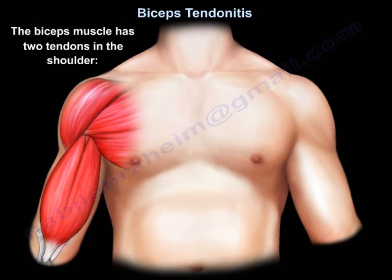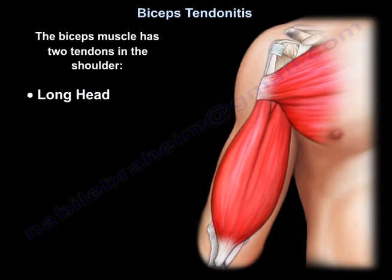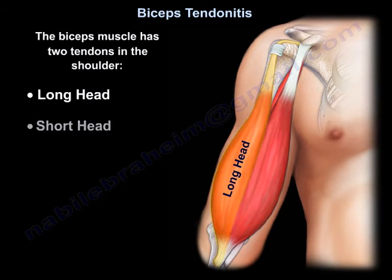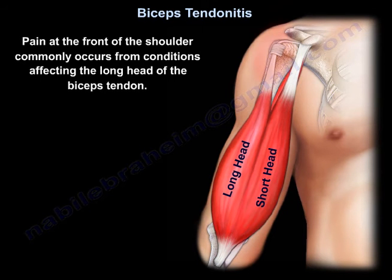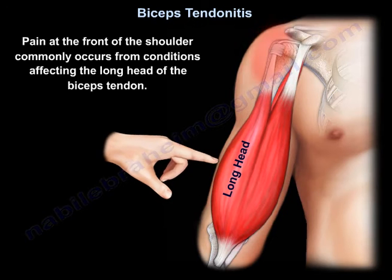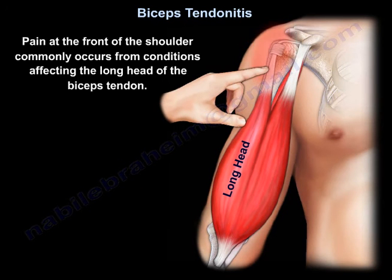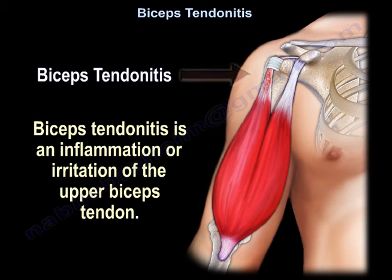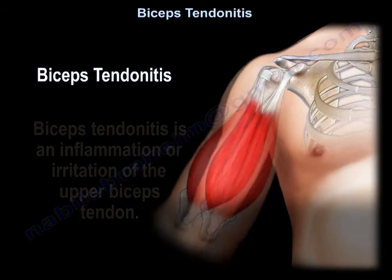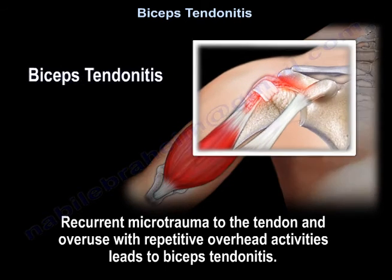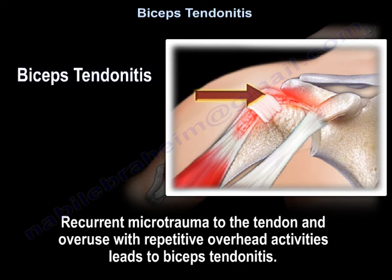Biceps tendinitis. The biceps muscle has two tendons in the shoulder: the long head and the short head. Pain at the front of the shoulder commonly occurs from conditions affecting the long head of the biceps tendon. Biceps tendinitis is an inflammation or irritation of the upper biceps tendon. It occurs due to microtrauma to the tendon, with overuse and repetitive overhead activities leading to biceps tendinitis.